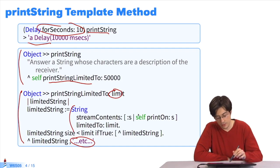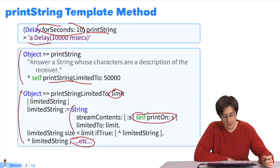The important thing here is that printStringLimitedTo sends a printOn message to self. This is the method that will or will not be redefined in the subclasses.